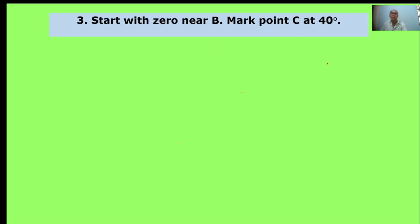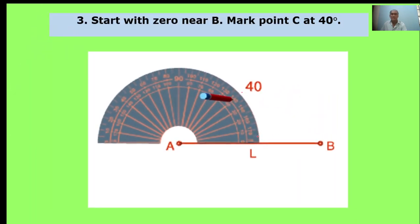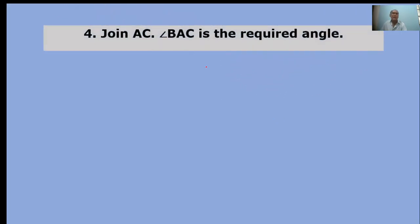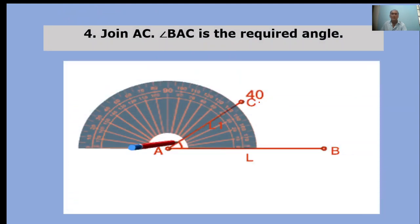Mark point C at 40 degrees. Here, zero, put at point A. We take the point to 40 degrees. Join AC. Angle BAC is the required angle. BAC is equal to 40 degrees.